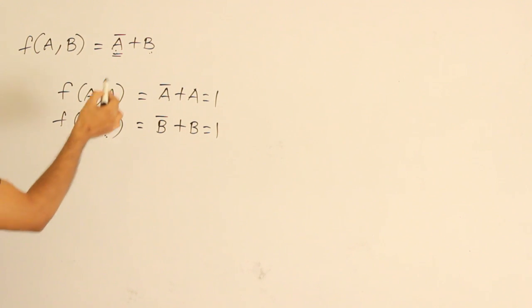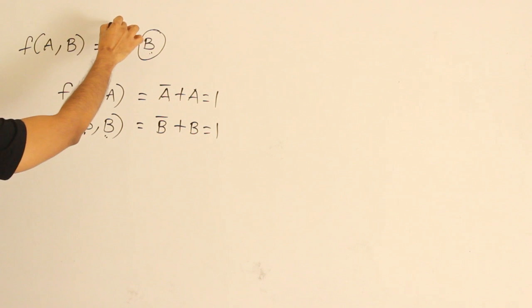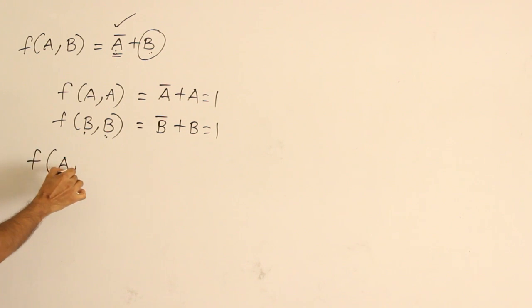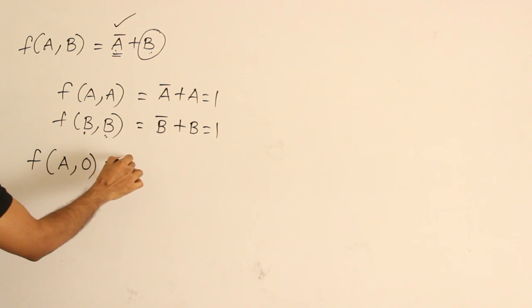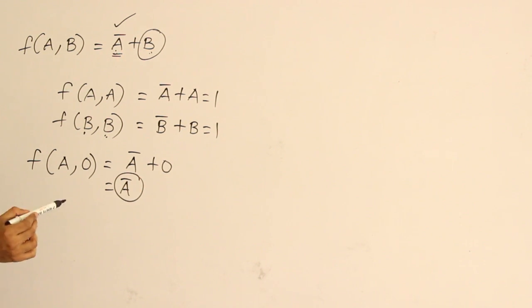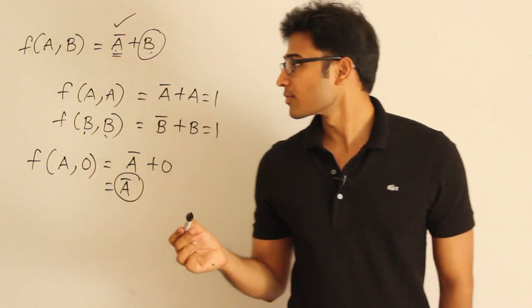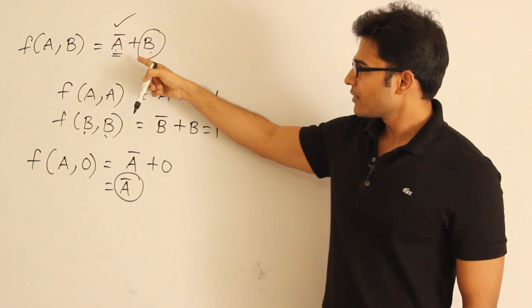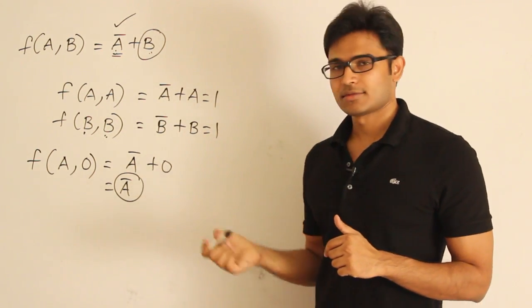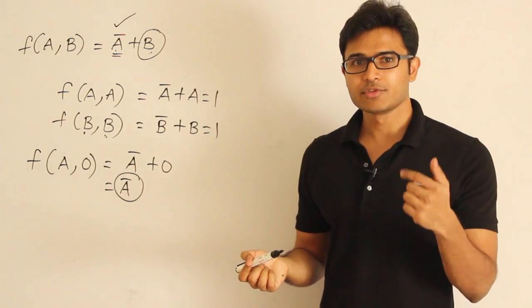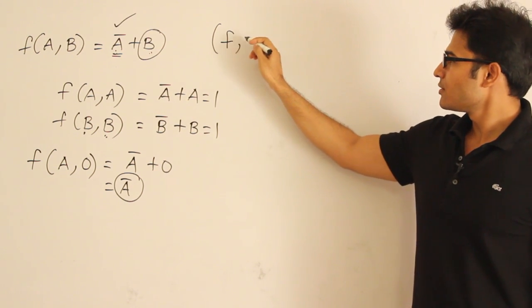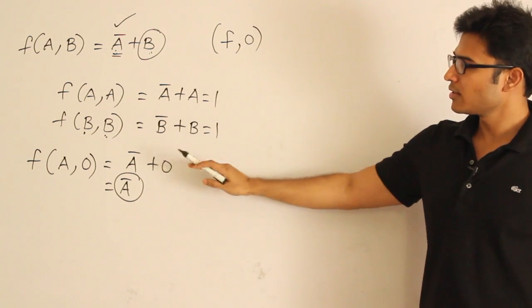If we could kill b somehow, we could get a'. The other way to kill b is to put 0 in place of b. So f(a, 0) gives a' + 0, which is nothing but a'. Yes, we got complementation — but indirectly, by taking the support of 0. So f alone is not enough; f(a, 0) is required to get complementation.